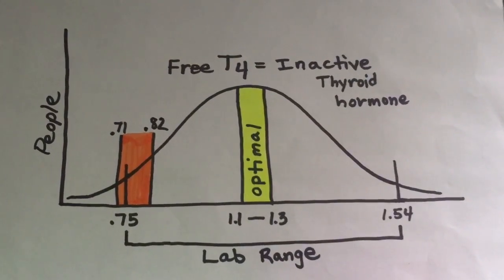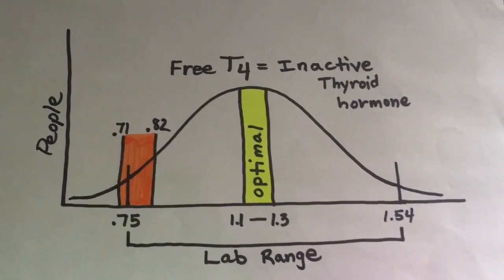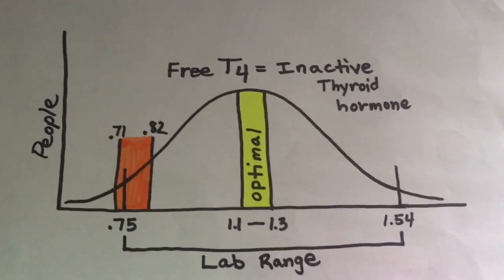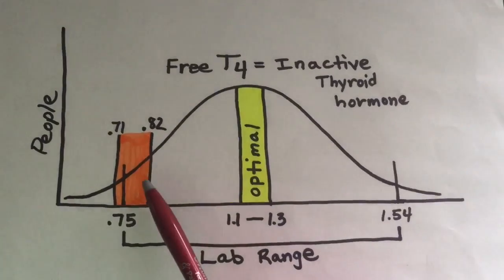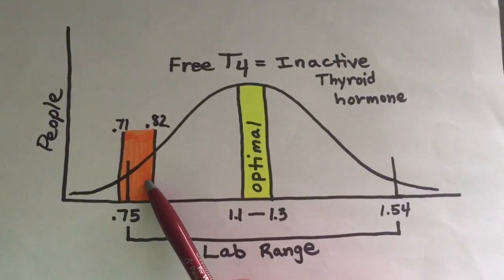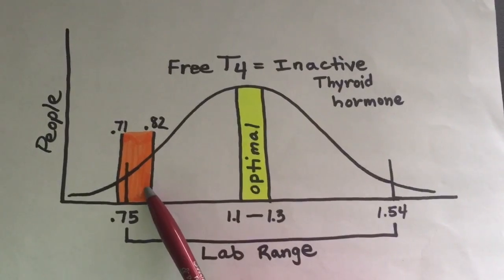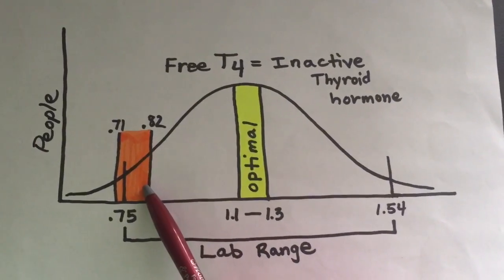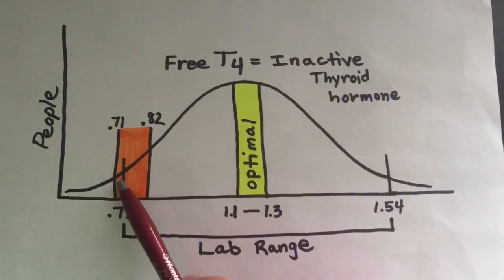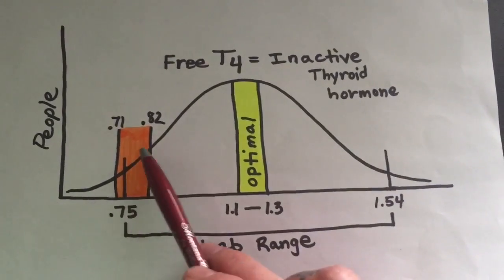This is such a common thing that happens. Somebody will go in with the main complaint of fatigue, have a thyroid panel run, be at the low end of thyroid hormones, and be told that the thyroid is functioning normally. We don't want to be on the verge of disease or hypothyroid or low thyroid.